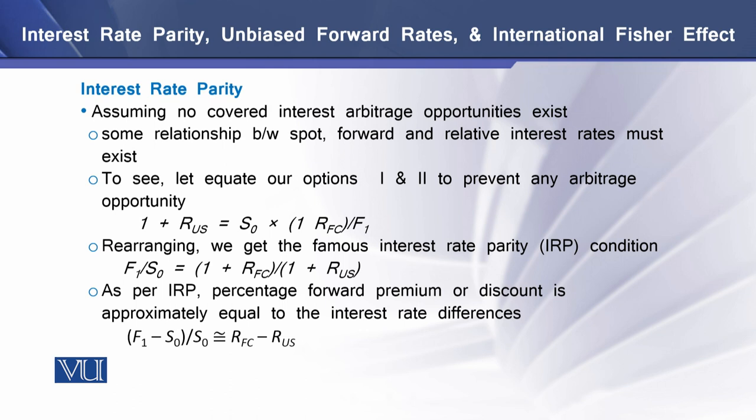Assuming no covered interest arbitrage opportunities exist, there must be some relationship between the spot exchange rate, forward exchange rate, and relative interest rates. Let's equate our two earlier options — option 1 and option 2 — to prevent any arbitrage opportunity.